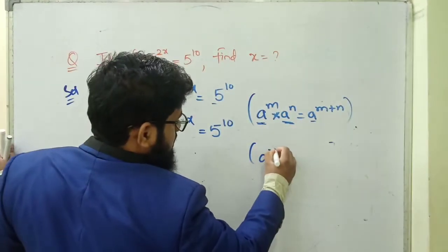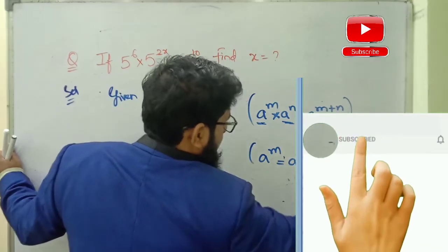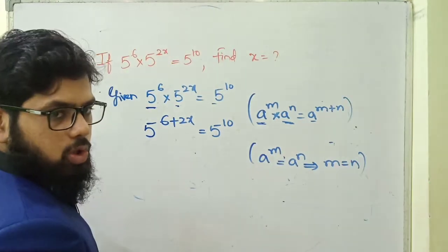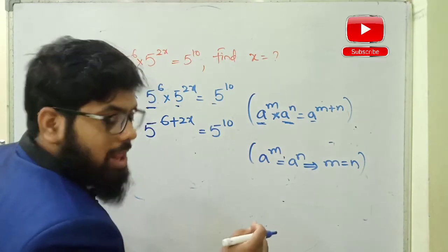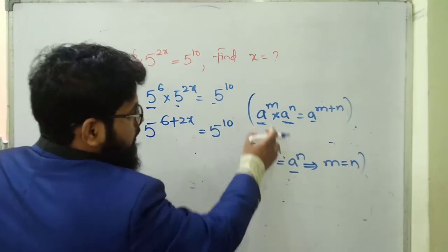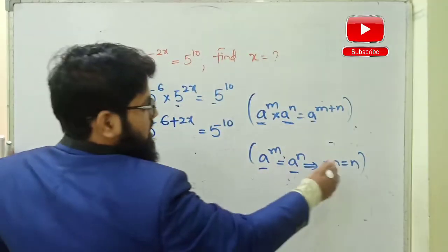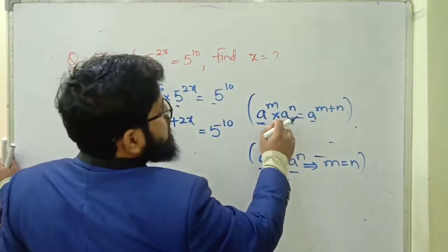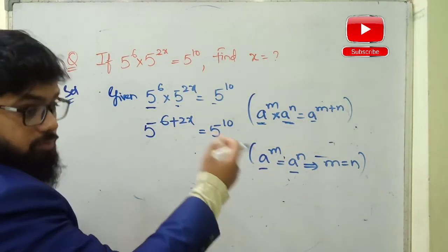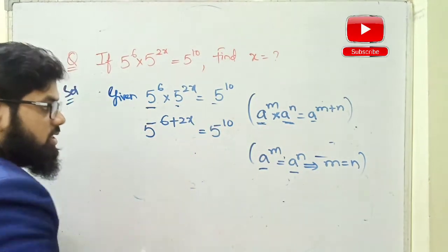Now we have one more formula: if a^m is equal to a^n, that implies m is equal to n. When bases are equal, equate the powers. Note the difference: when multiplication (into) is between bases, you add the powers; when equal to is between them, you equate the powers. This is important to remember.